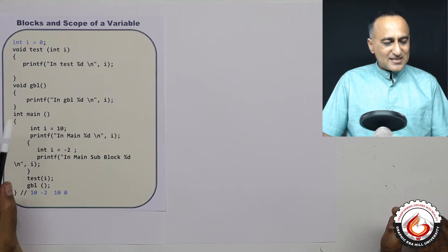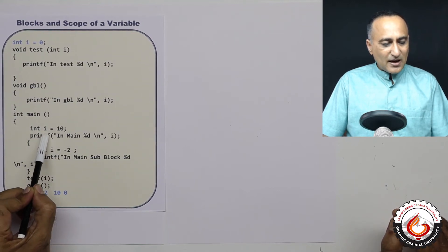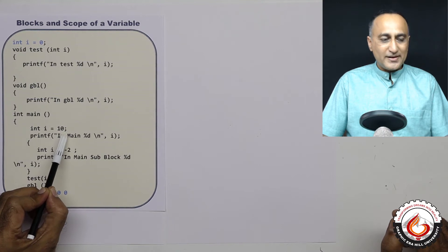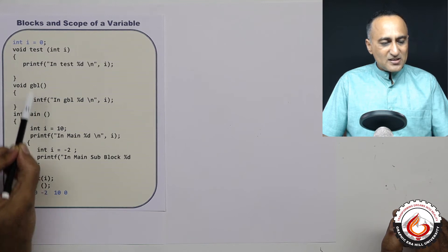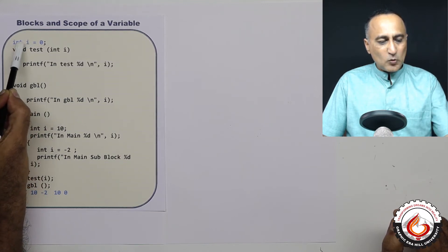Now what I have done is in main, I have declared an integer variable i and I have given it the initial value 10. Now you need to understand the i in main is not the same as the global i.